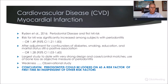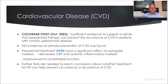Ryden's conclusions were that periodontitis could be looked on as a risk factor for first-time MI independent of other risk factors — potentially alongside cholesterol, obesity, and smoking as traditional risk factors. But remember: this is an observational study only. The Cochrane Library reviewed all these studies through October 2022 and concluded there is insufficient evidence to support or refute that periodontal therapy can prevent the recurrence of cardiovascular disease in patients with chronic periodontal disease. So results are mixed.